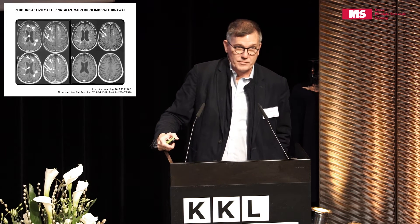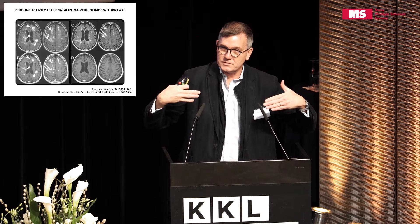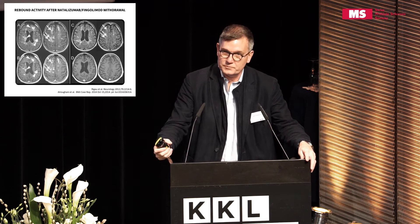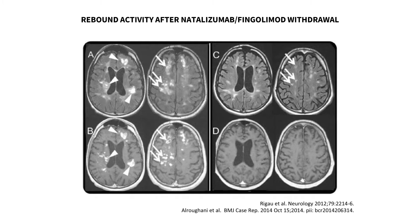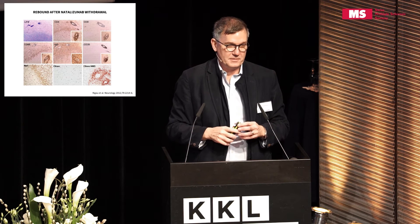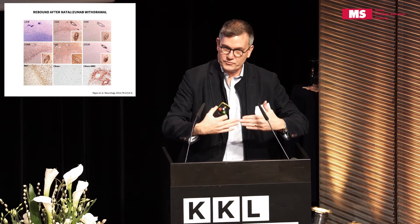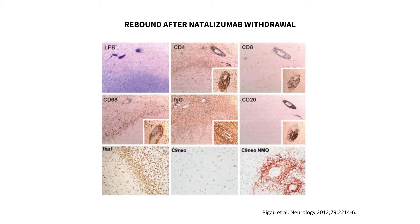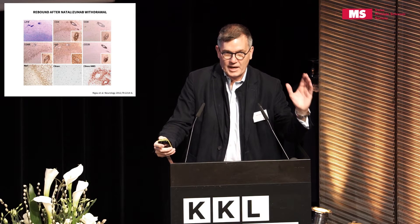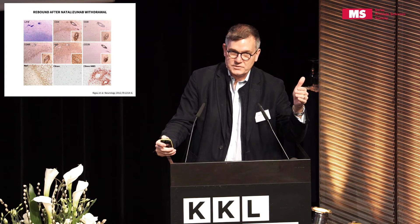The big evidence comes from natalizumab, one of our most effective therapies, which blocks trafficking of the adaptive immune response — both T and B cells — into the central nervous system. When you stop the drug, between 40 and 50% of people have an enormous rebound: activity far above what you'd expect from baseline characteristics. Something is happening inside the brain of people with MS that natalizumab keeps the immune response from finding. Remove it, and you get this enormous rebound. These rebound lesions are full of typical inflammatory infiltrates seen in MS.